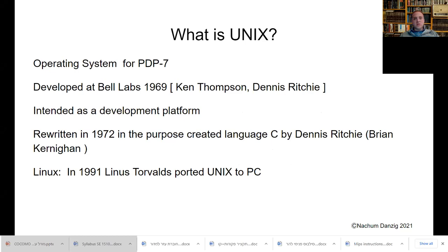What is Unix? It's an operating system originally for PDP-7, also for PDP-10, and PDP-11 — these are mainframe computers. It was developed at Bell Labs in 1969 by Ken Thompson and Dennis Ritchie. Dennis Ritchie was also involved in creating the C language, along with Brian Kernighan, and that language was purposely written for the Unix operating system.